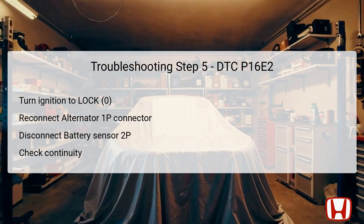Begin by returning the ignition switch to the lock position (0) for safety, then reconnect the alternator 1P connector, ensuring that connections are secure before proceeding. Next, disconnect the battery sensor 2P connector to isolate its influence on the LIN communication function. With the connector removed, check continuity between test points 1 and 2 as defined in the circuit diagram. This measures from battery sensor 2P connector, pin 2 (blue), to body ground. If there is continuity detected, it may confirm that the alternator is faulty but that the LIN wiring itself is operational, necessitating its replacement. Conversely, if no continuity is found, further investigation is required to determine if the fault lies within the LIN line itself.